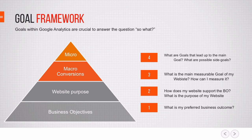Once you have that settled, it should port over to what the purpose of the website actually is — how does the website support the business objectives? What is really the purpose of the website and what are the key actions we want a user to take? Steps three and four are about how we can measure that, using the concept of macro and micro conversions. Macro conversions are the big measurable goals that tie directly back to the website purpose and business objectives.